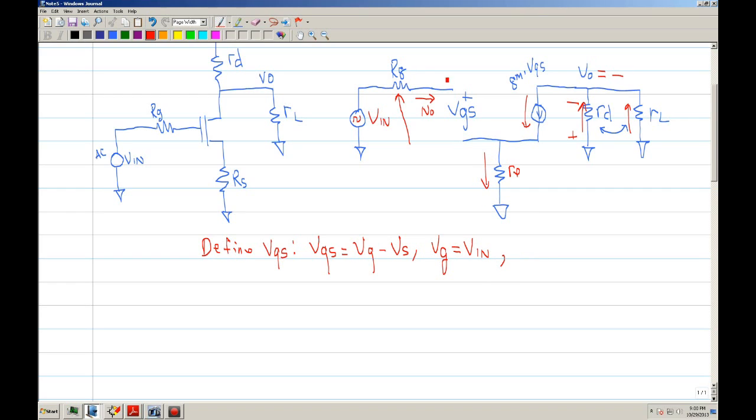And so this is VG. VS. So VS is going to be GM VGS times RS. So this current is going to develop a voltage and that voltage will result in VS. Okay, so now we put VGS together.